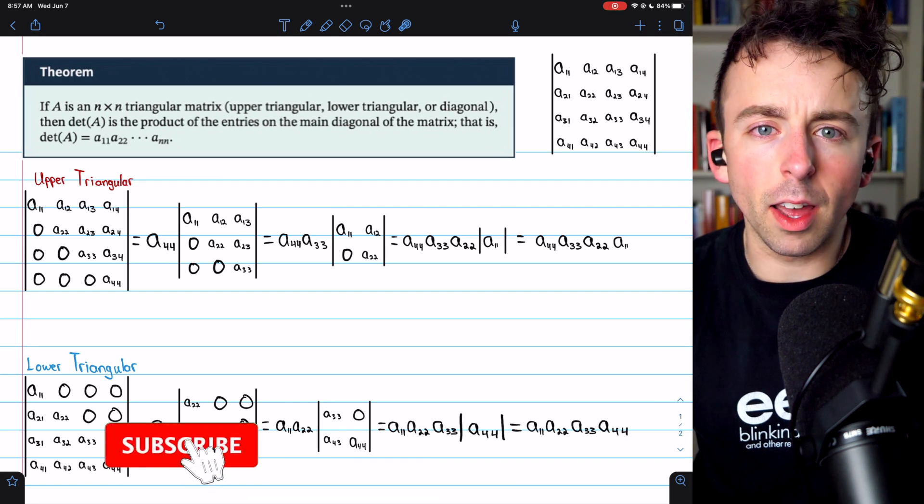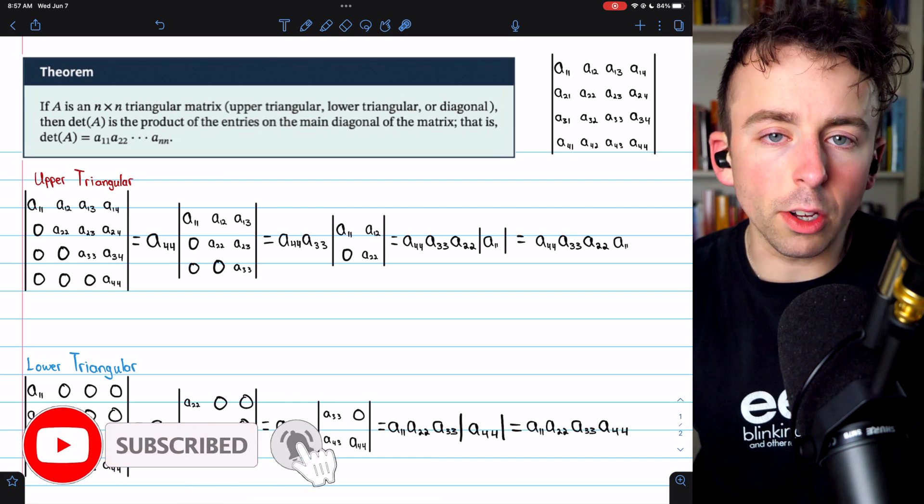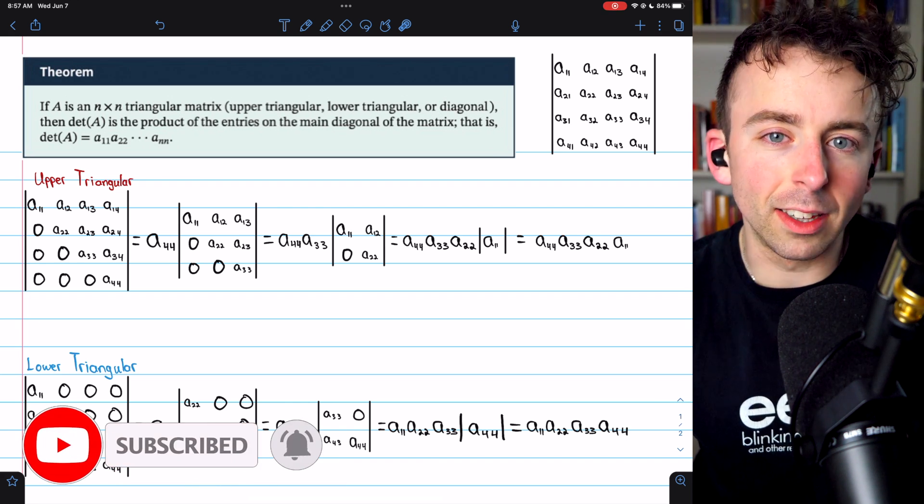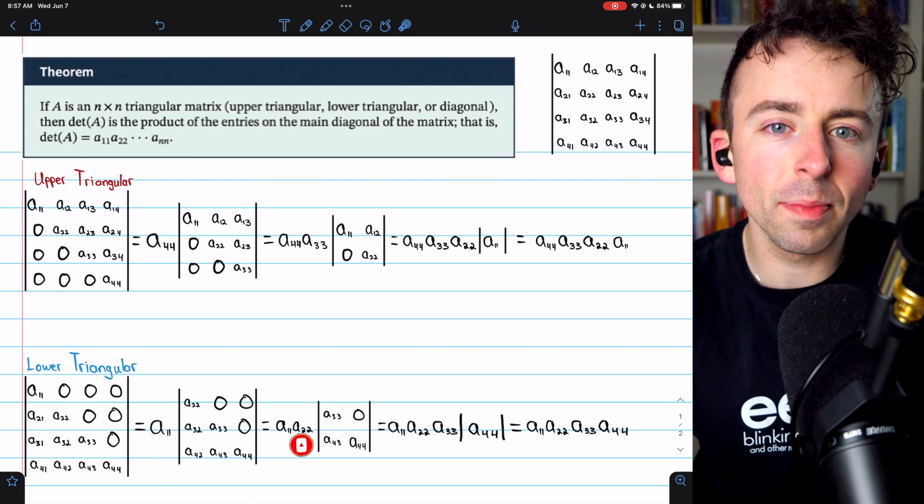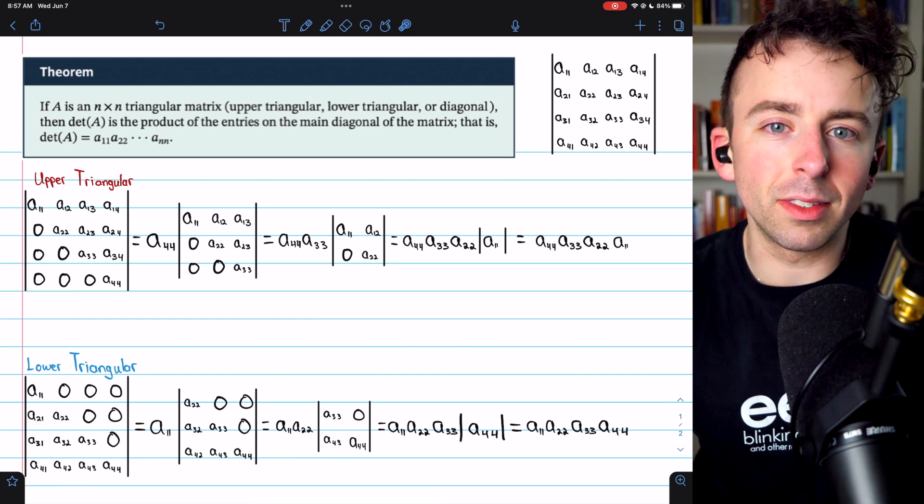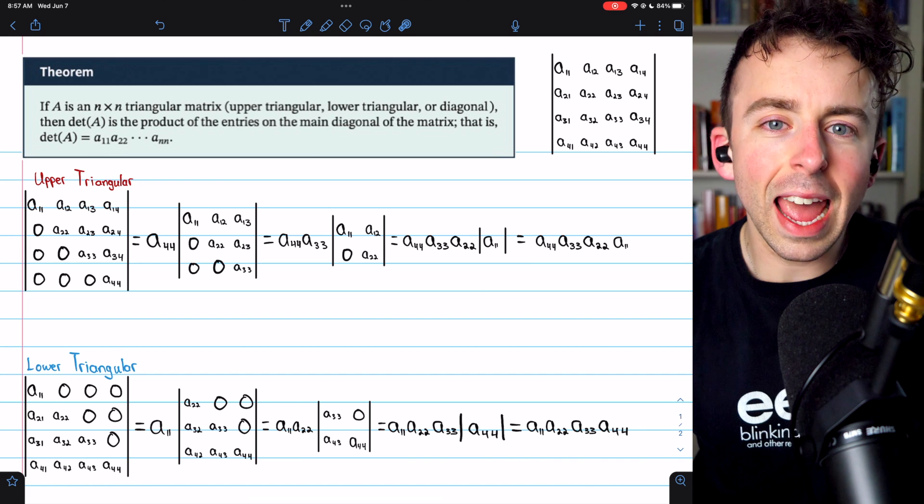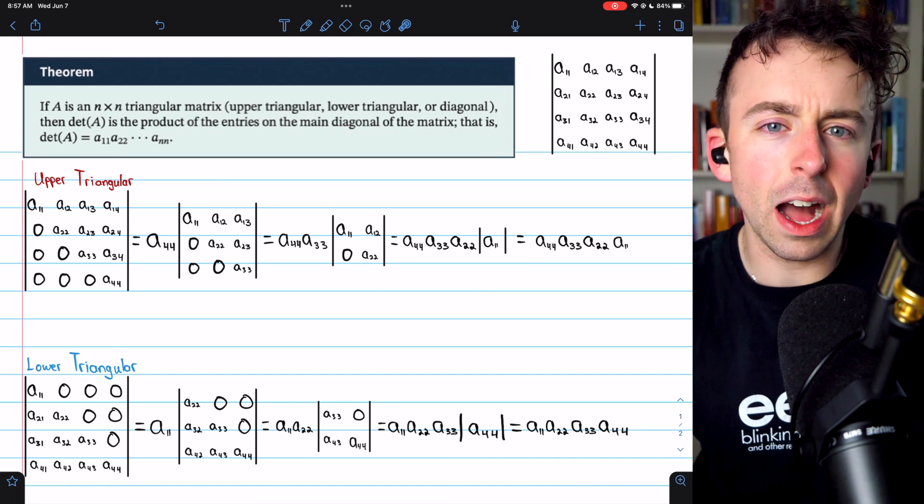Now that we've defined the determinants of n-by-n matrices using cofactor expansions, link the description to the lesson where we do that, we can further develop this definition by looking at some properties of the determinant and some alternative methods to calculate it.